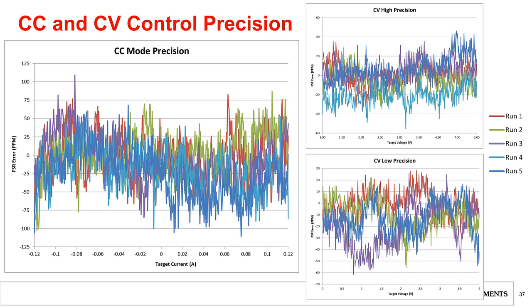In constant voltage mode, we achieved an envelope of ±70 ppm, with typical results within ±50 ppm.